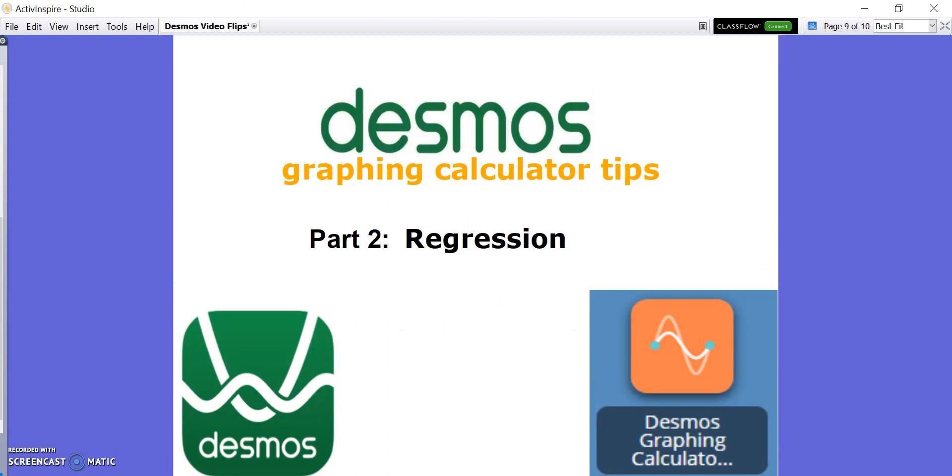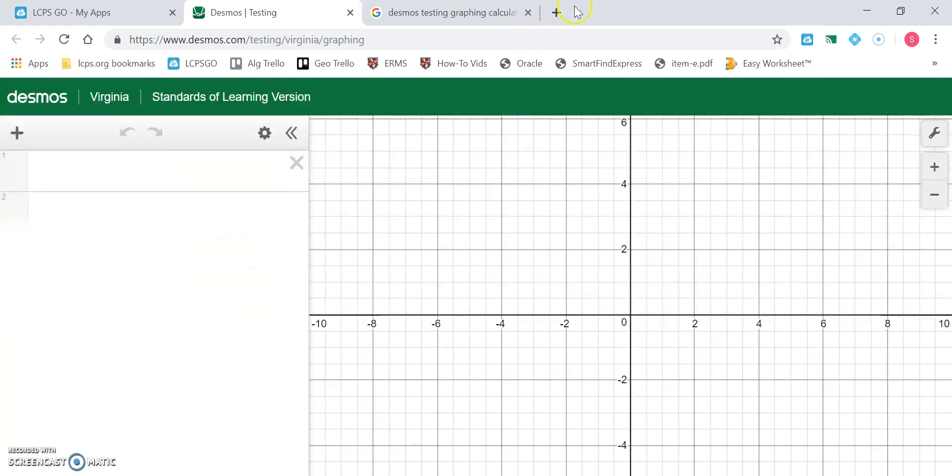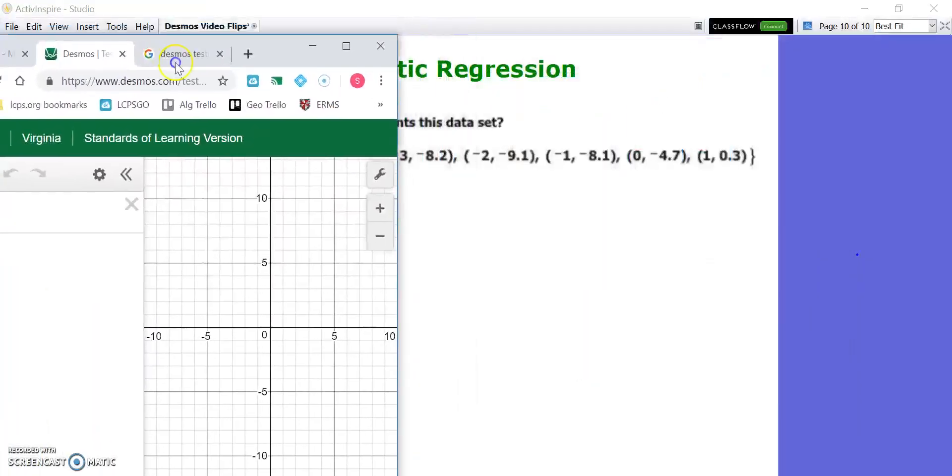We're going to talk about regression. Here's the problem I usually see on the Algebra 1 SOL. This video is specifically for Algebra 1. There are questions where they don't give you tables anymore - they give you a list or set of ordered pairs, and they want you to pick the best equation. You've got to consider if it's linear or quadratic. They only do these two types of regression on the Algebra 1 SOL. First, we would put in all these points in Desmos.